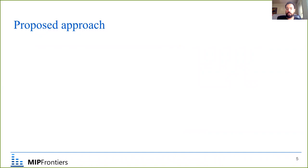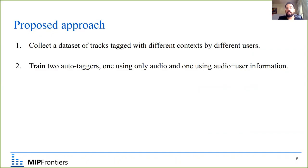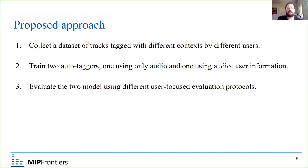So what is our proposed approach? First, we collect a dataset of tracks where different users have different contextual uses for each track. Following this, we train two auto-tagging models: one using only the audio content, and one using audio plus some form of user information. Finally, we evaluate both models using user-focused evaluation protocols to assess the satisfaction of different users with the predicted tags.